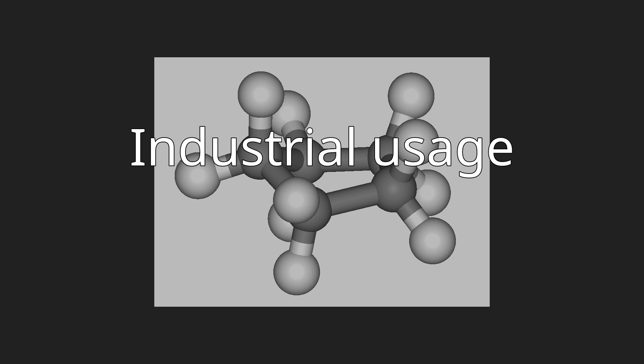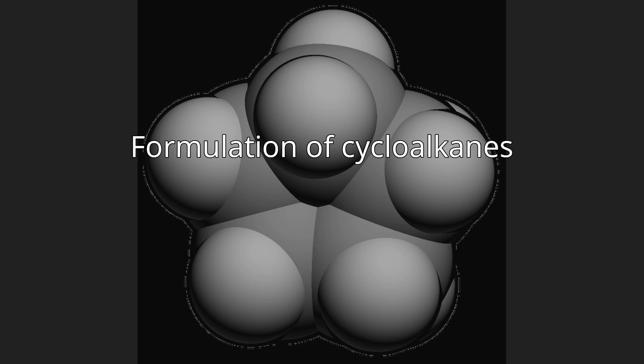Multiply alkylated cyclopentane (MAC) lubricants have low volatility and are used in some specialty applications. Cycloalkanes can be formulated by a process known as catalytic reforming. For example, 2-methylbutane can be reformed into cyclopentane by use of a platinum catalyst. This is particularly well known in automobiles, as branched alkanes will burn much more readily.